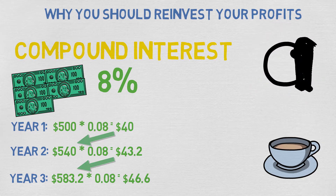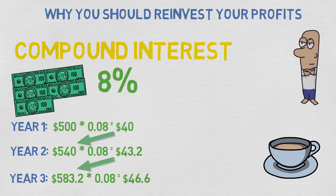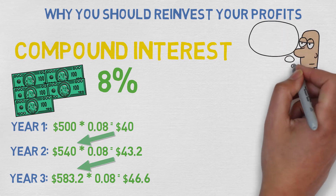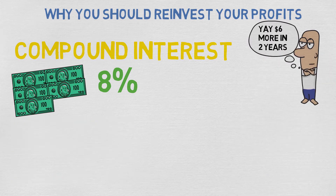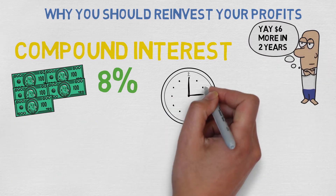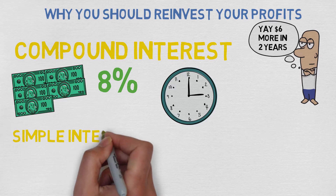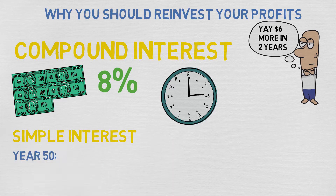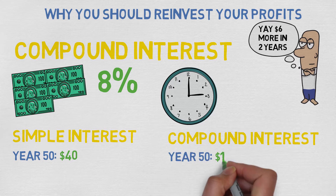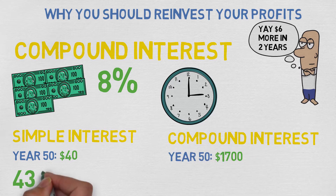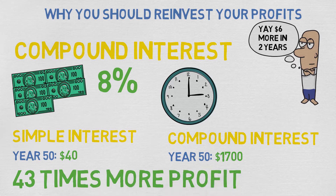You might think: why reinvest if it only makes you a couple dollars more a year? Well, because in the long run it makes a huge difference. 50 years later, with simple interest your profits would still be just 40 dollars a year. But with compound interest they are already over 1,700 dollars a year — that's over 43 times more than without reinvesting.